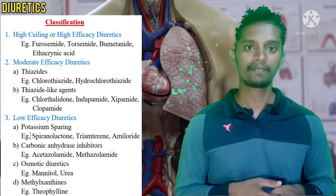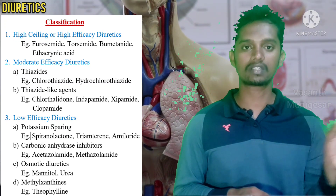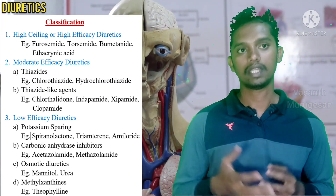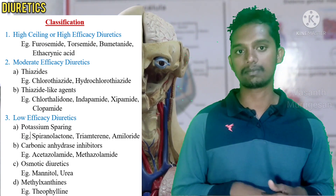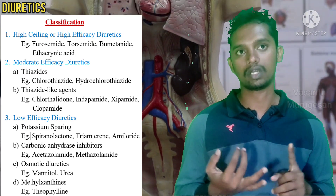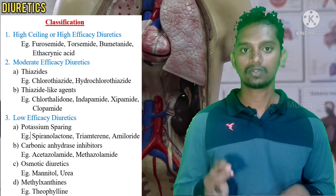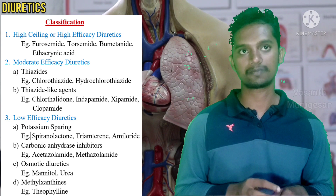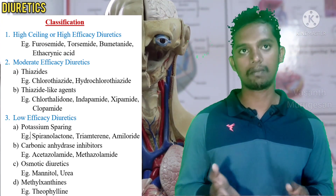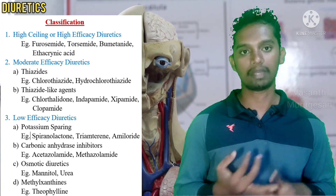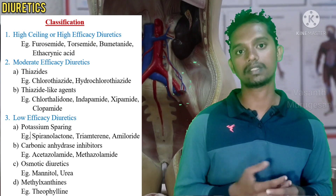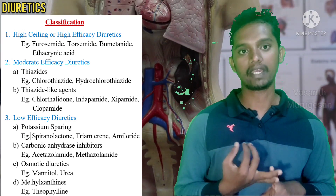Most thiazide-like drugs end with the suffix '-amide', which is another mnemonic. The third major category is low efficacy diuretics, which has several subcategories. The first is potassium-sparing diuretics — example drugs are spironolactone, amiloride, and triamterene. The second subcategory is carbonic anhydrase inhibitors — example drugs are acetazolamide and methazolamide.